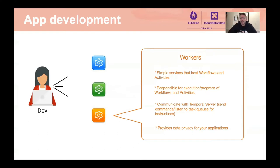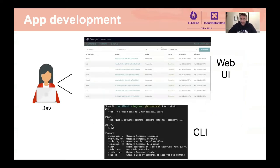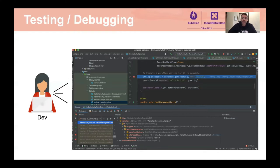Workers communicate with the Temporal server, which is important for running, invoking, and resuming workflow execution. In addition to the SDKs and programming model, Temporal provides a web UI through which you can see what workflows are running, their state, execution history, and stack traces. It also provides a CLI which is even more powerful — you can start workflows, run batch executions, and more. For testing and debugging, you can use your IDEs and standard testing and debugging libraries of your choice.